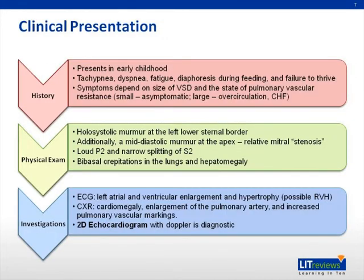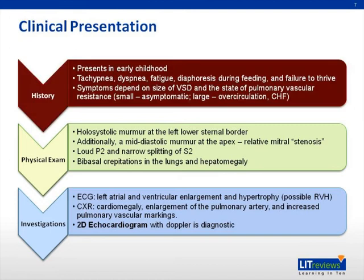The presentation of a VSD is highly variable and depends on both the size of the defect and the state of pulmonary vascular resistance. Patients with small defects tend to be asymptomatic and may present later as adults. In this day and age, VSDs are largely picked up in neonates by a murmur noted on examination. Larger defects may lead to pulmonary over-circulation and eventually congestive heart failure, with patients presenting in early childhood with tachypnea, dyspnea, fatigue, diaphoresis during feeding, and failure to thrive.